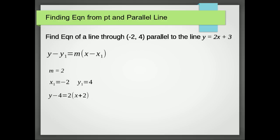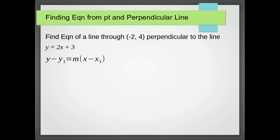What about finding the equation from a point and a perpendicular line? Well, the gradient of our line is 2, and the gradient of the perpendicular of that is going to be the negative reciprocal. So the reciprocal of 2 is 1 over 2, which is a half, and the negative reciprocal is minus a half.